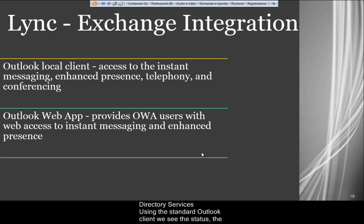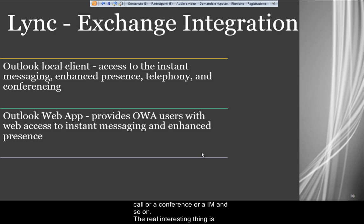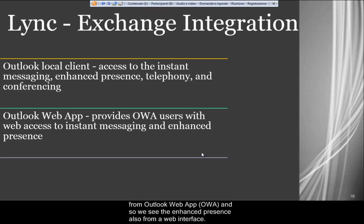Using the standard Outlook client, we see the status — the presence information of the person — and we have tools to launch a call, maybe a telephone call, or a conference, or an IM, and so on. The real interesting thing is that we are able to know the status of a contact, the aforementioned presence, also from Outlook Web App, OWA, and so we see the enhanced presence also from a web interface.